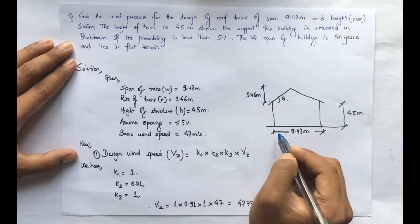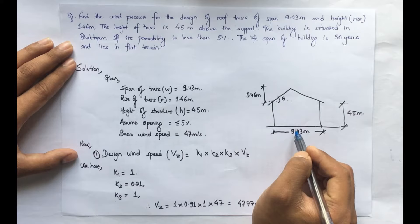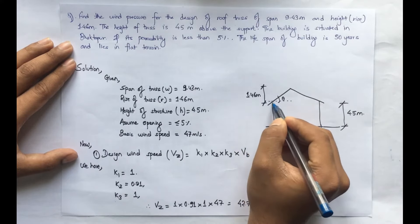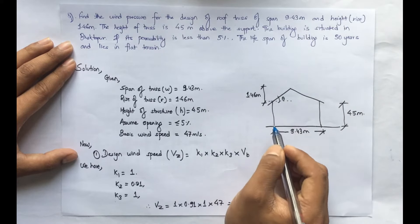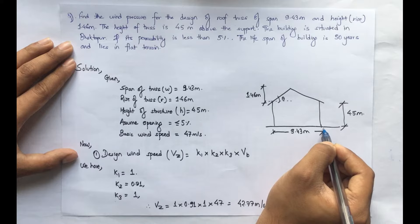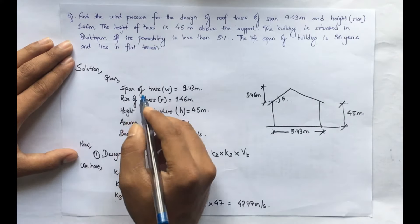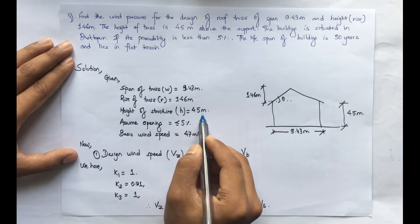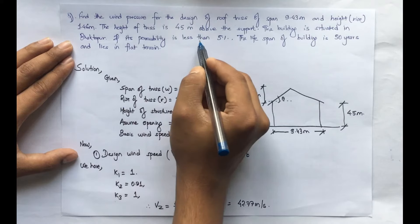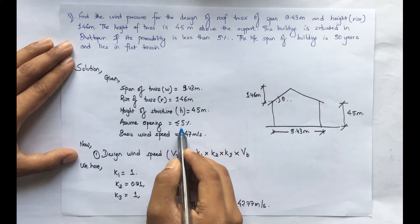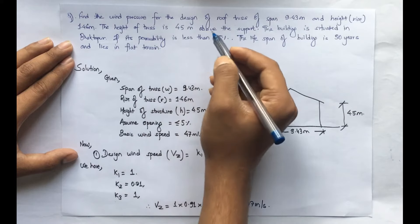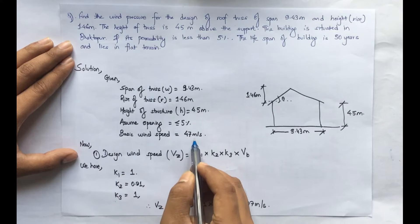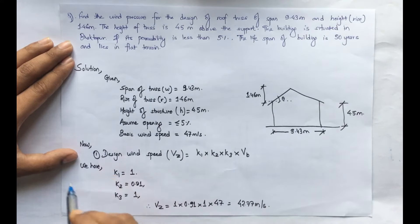The span of the truss is 9.43 meters and the rise is 1.46 meters from the eave to the ridge. The height of the truss is 4.5 meters above the support. Given data: span = 9.43 m, rise = 1.46 m, height = 4.5 m, opening less than 5%. If permeability is normal, we would use 20%. The basic wind speed is 47 m/s for Bhaktapur.